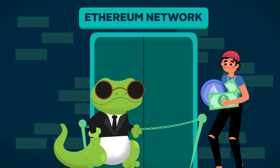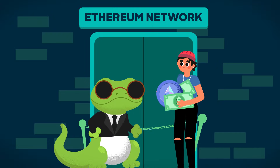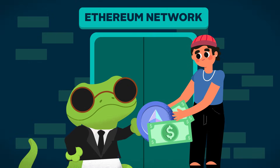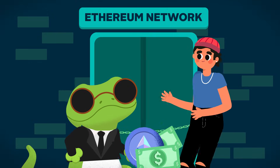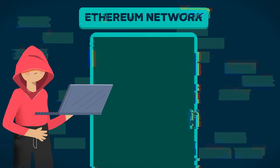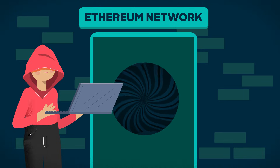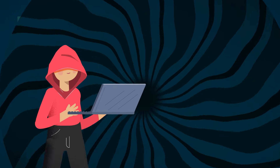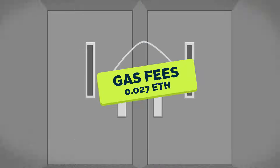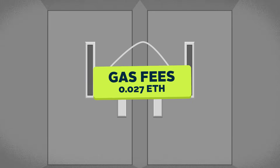Gas fees also play a key role in keeping the network secure. Imagine if using a network like Ethereum was completely free — malicious users could exploit this by spamming the network with endless computational loops. By requiring a gas fee for every operation, the network creates an expensive barrier against such abuse.